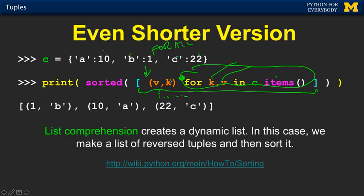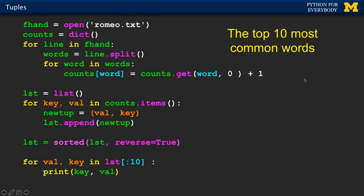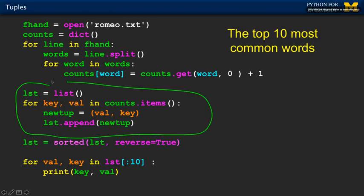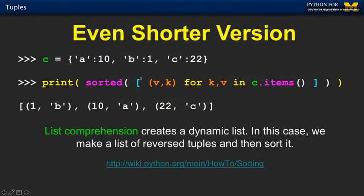So this little bit in the brackets is the same as this bit right here — it's basically the same as doing the explicit for loop except it's expressing it in a more direct but slightly more complex way. And so this is a list computed on the fly — it's a three-element flipped list with values and keys. And then I pass this right into the sorted function.